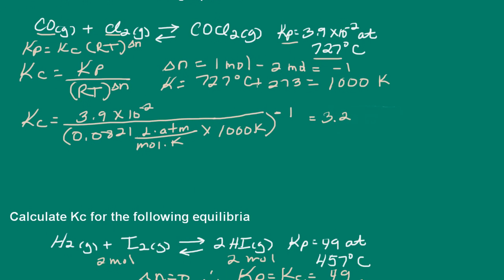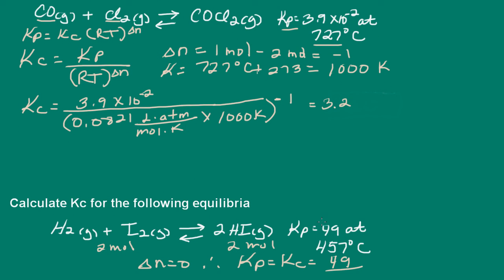Now, I have one more problem. Here we're asked to calculate Kc for the following equilibria. Again, this is one of those problems where the number of moles of reactant gas and product gas are equal. So that means delta N is zero. So Kp is going to be equal to Kc. And in this case, it is 49.